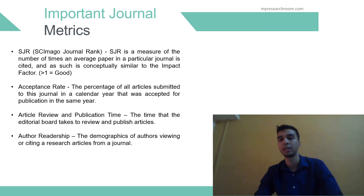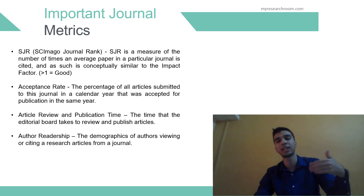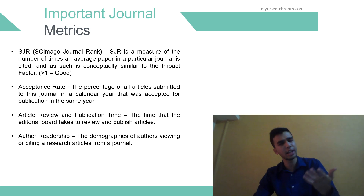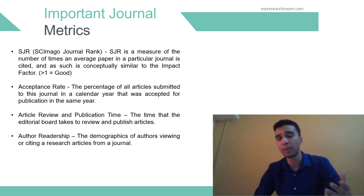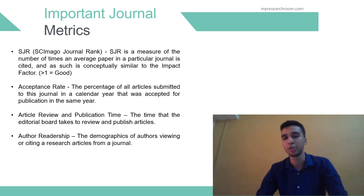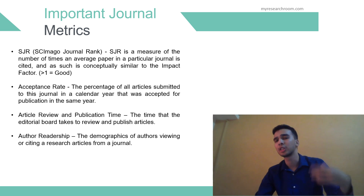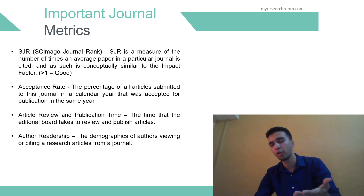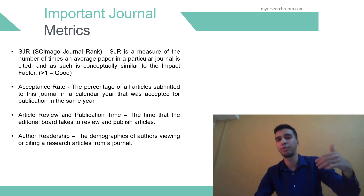The next is the acceptance rate, which is the percentage of all articles submitted to any journal in a calendar year that were accepted for publication in the same year. This gives a good indication of the size of the journal; articles that were withdrawn are not included in this data. The article review and publication time refers to the time that the editorial board takes to review and publish articles. Finally, author readership is the demographics of authors viewing or citing a research article from a journal, which might include the author's country of origin or field of study.